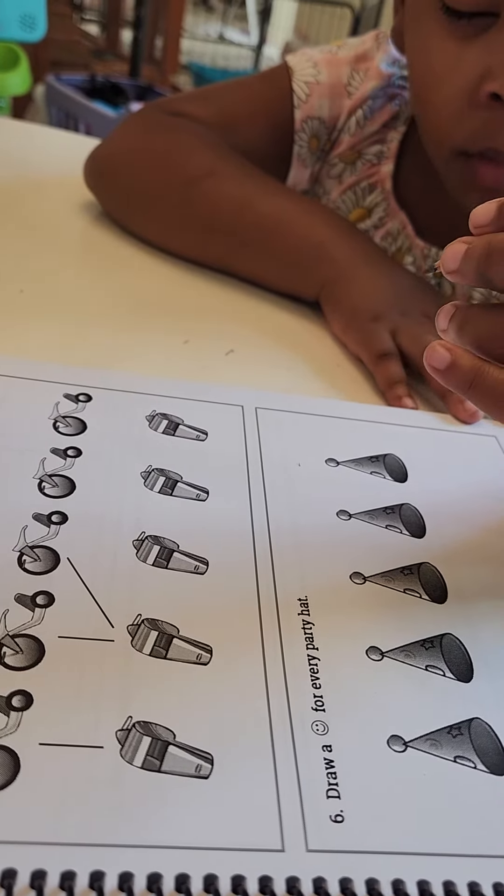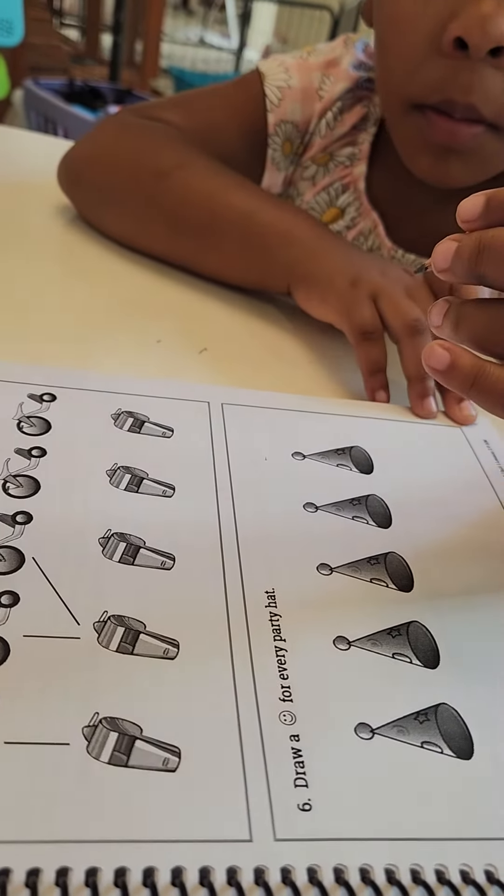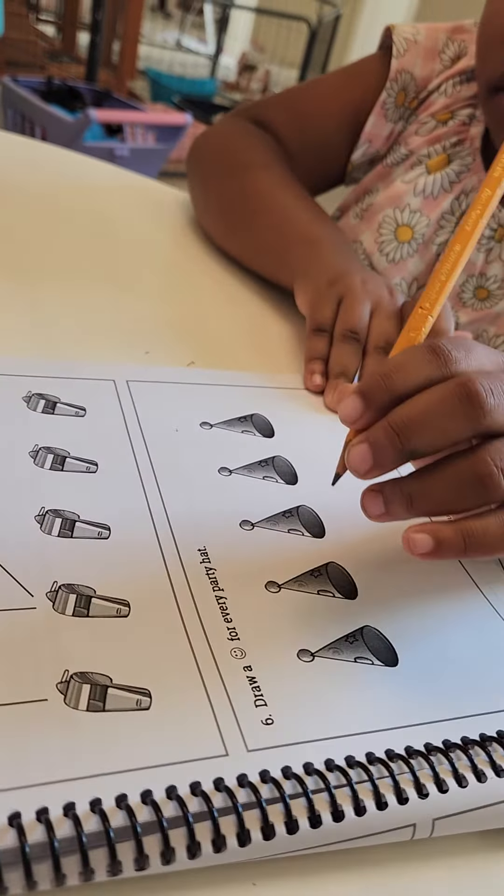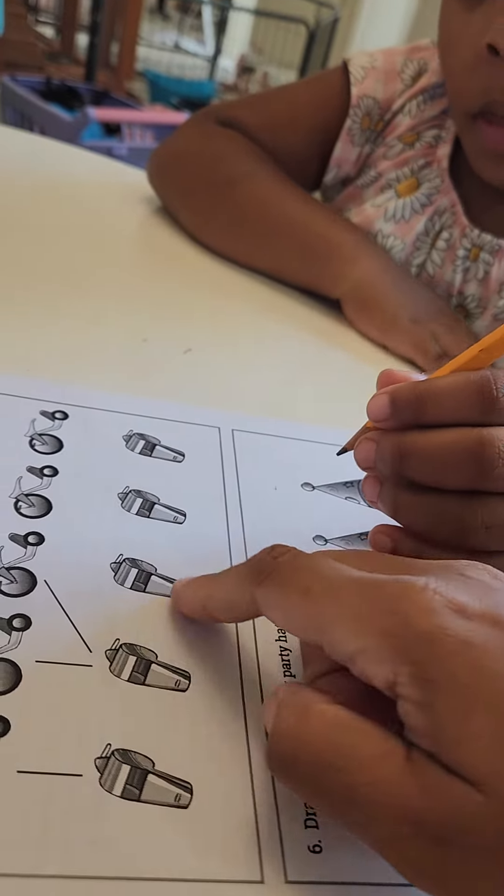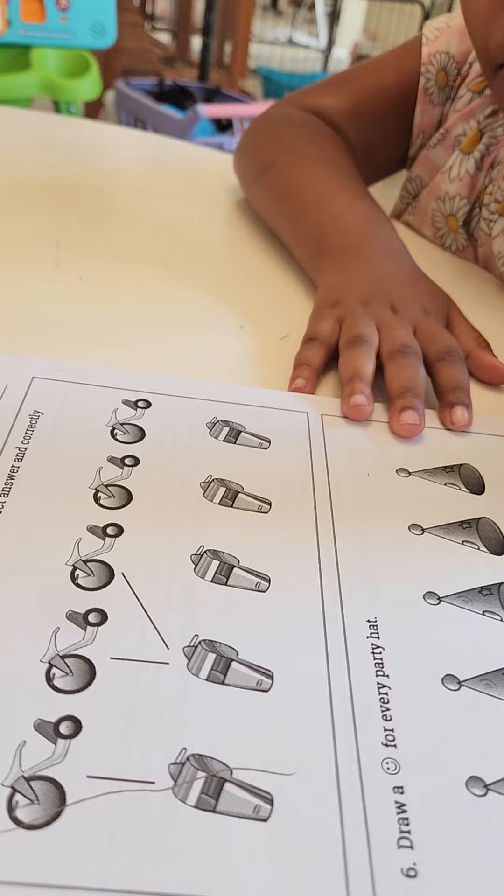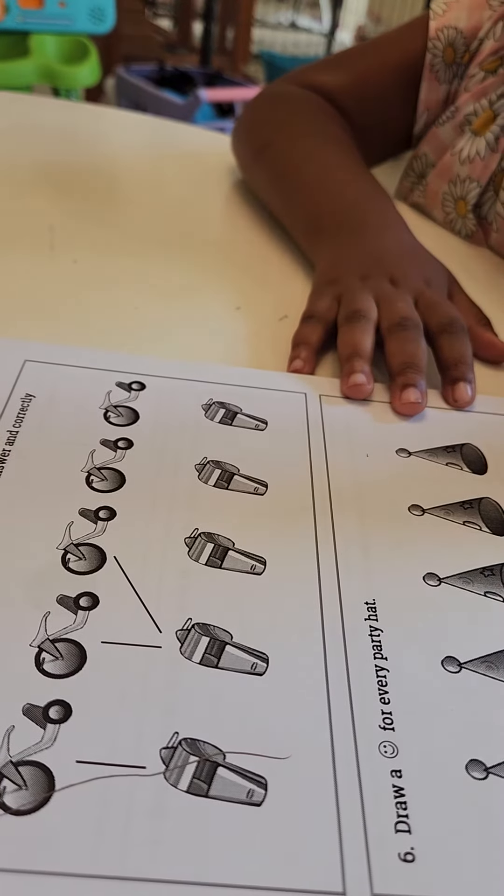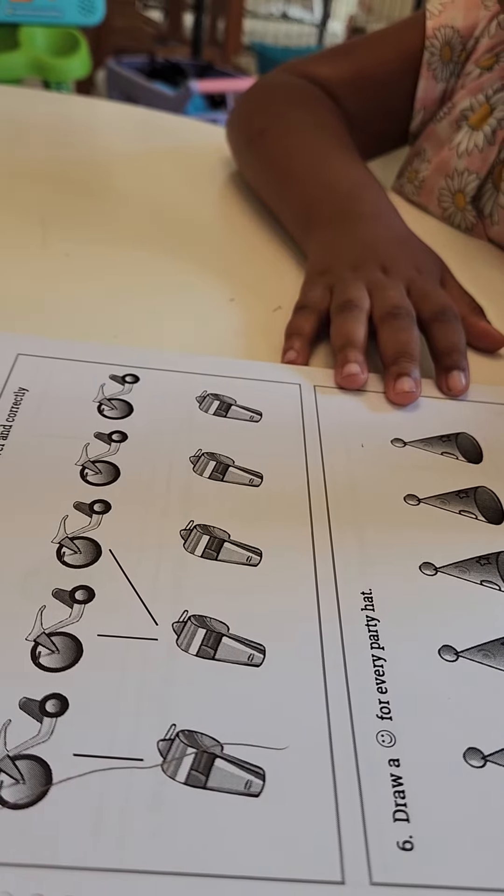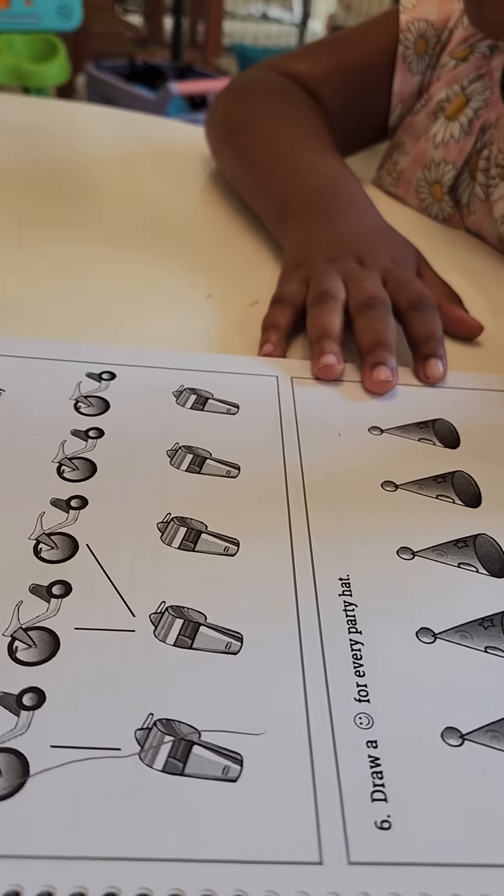Okay, cross out the incorrect answer. Correctly match the objects. So you got to match the bike to the whistle with a straight line. Match the rest of the bikes and the whistles.